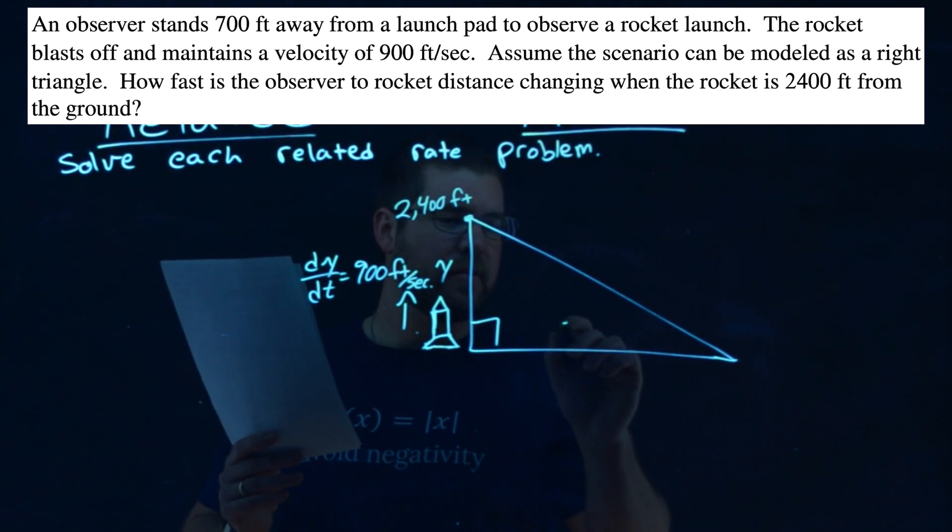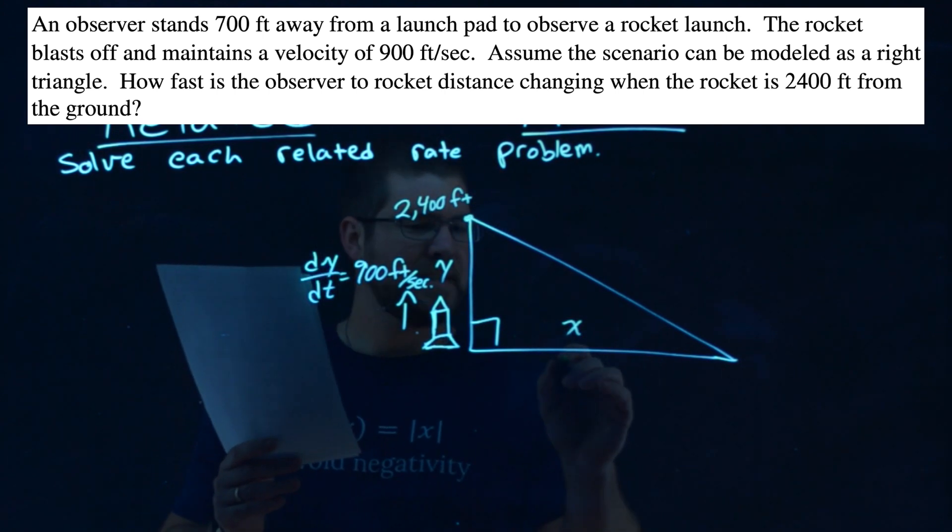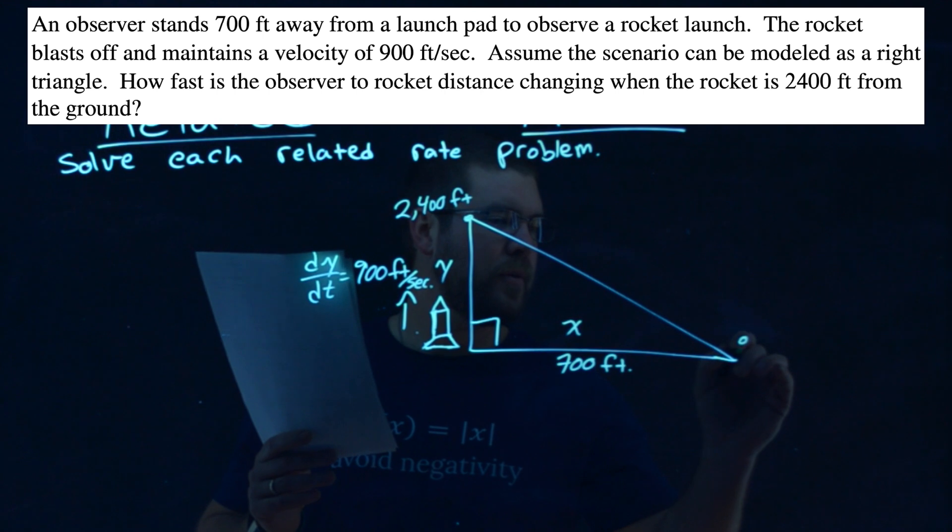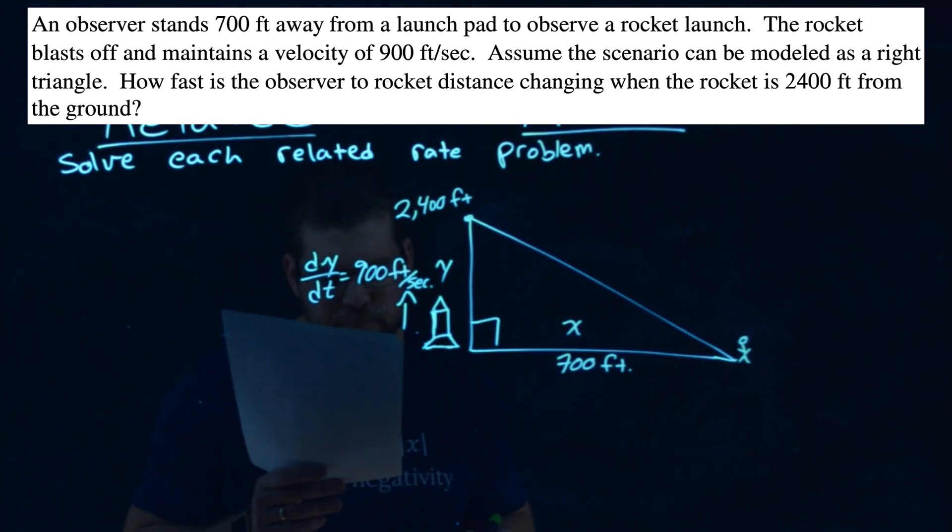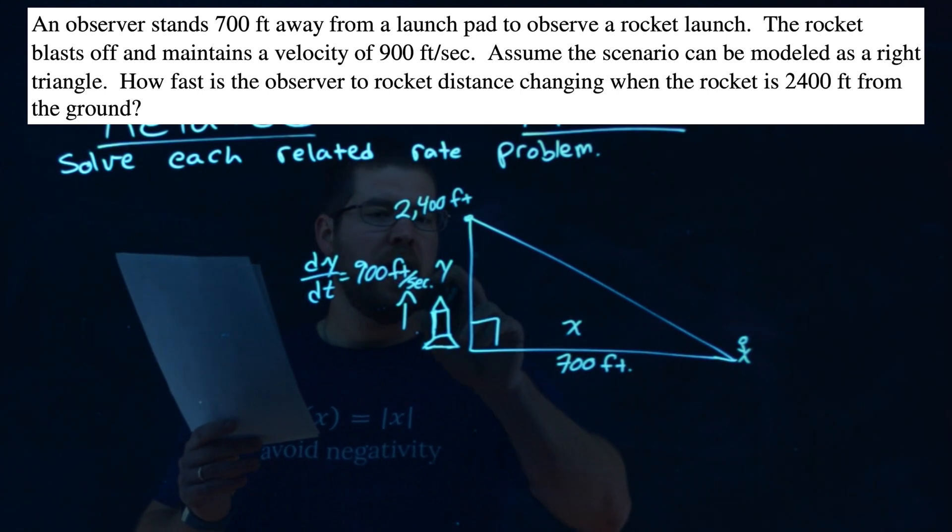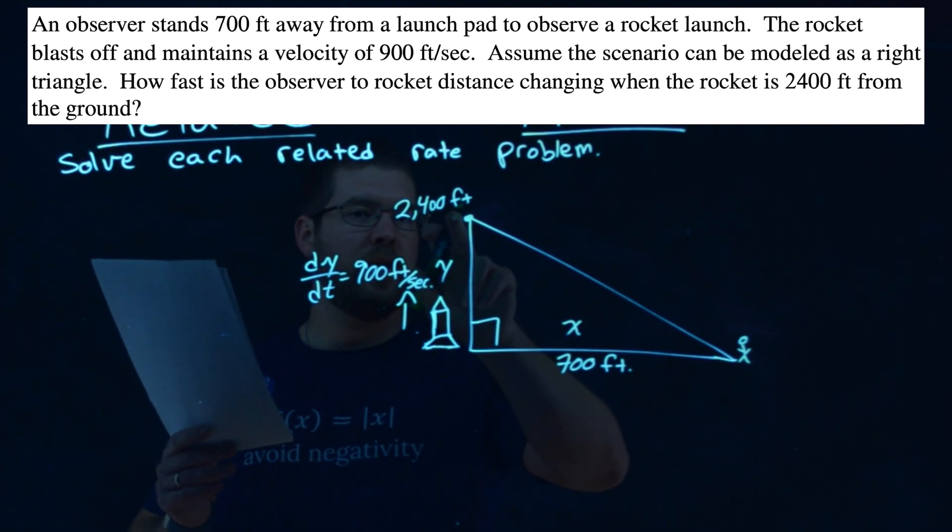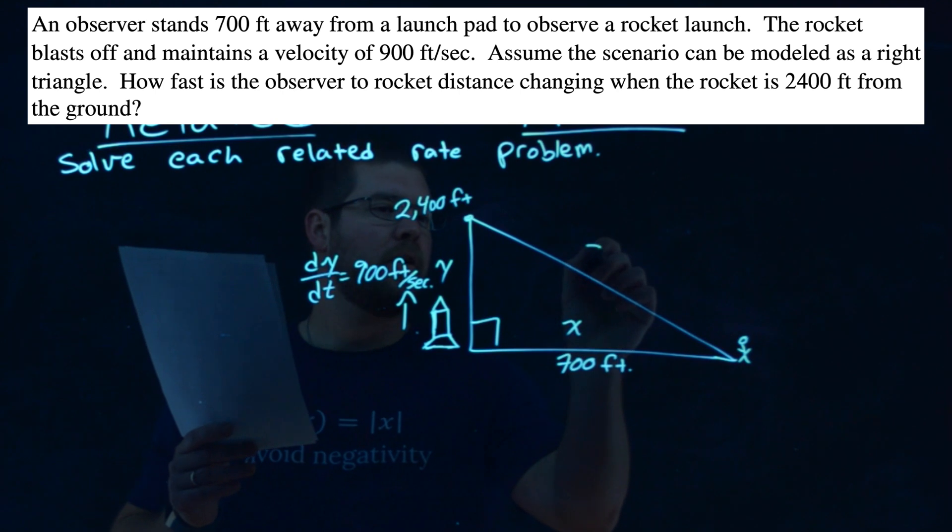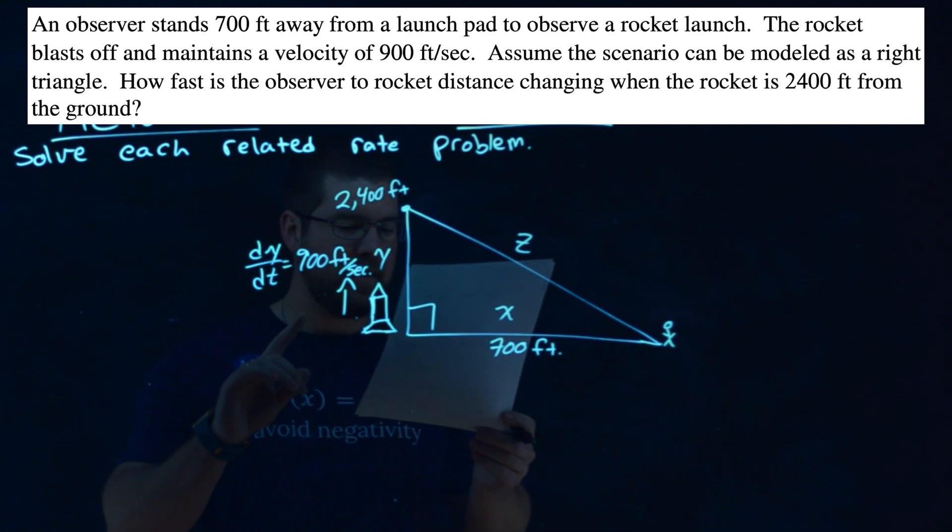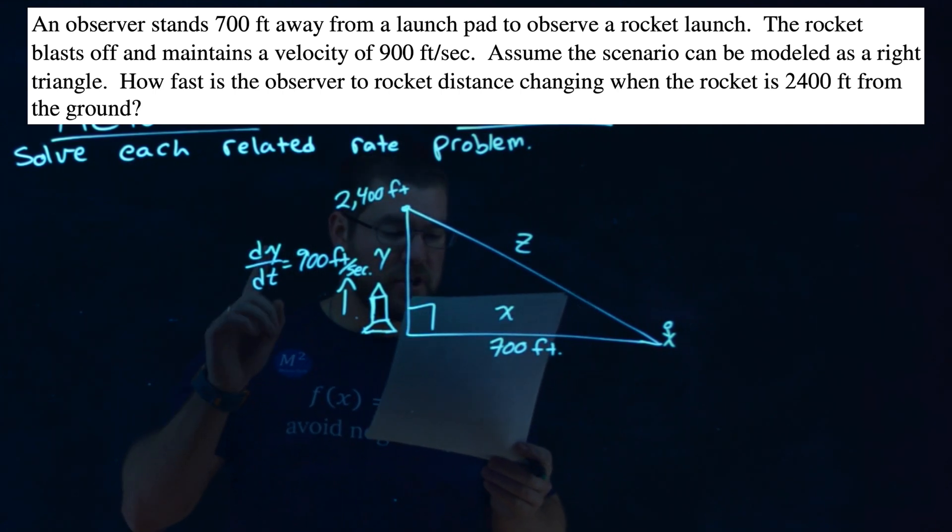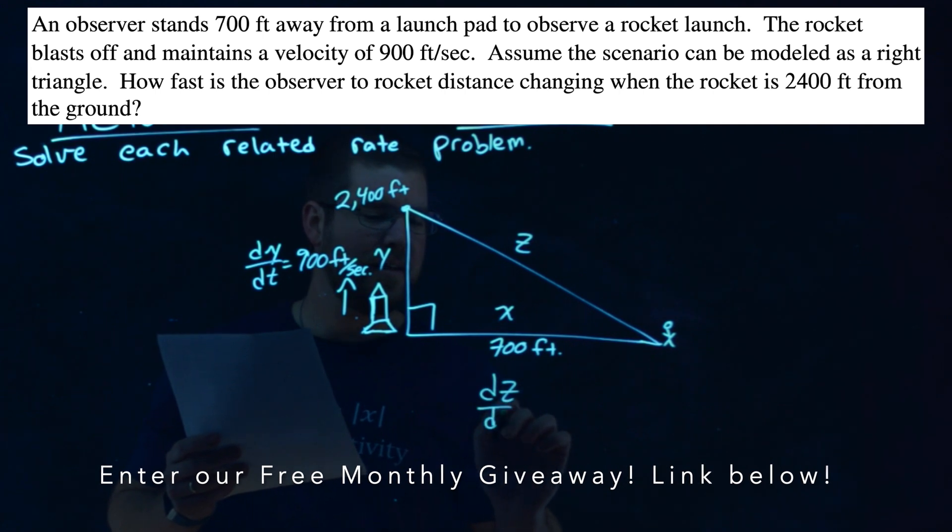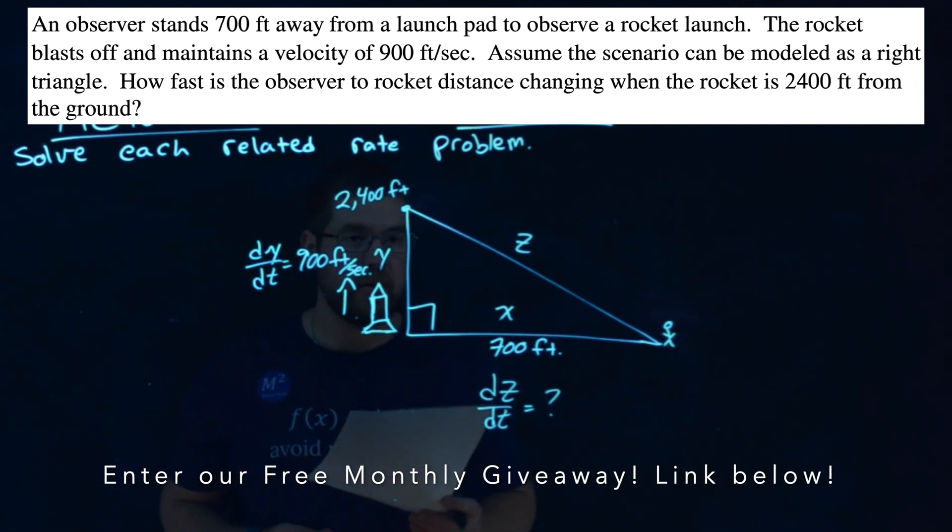Let's call this length X, and the person is 700 feet away, this little person, the observer. So we have 700 feet away, and the height of the rocket at the moment is 2,400 feet, and we'll call this length Z. But they're asking us, how fast is the observer to rocket distance changing? So we want to find dZ/dt here. That's what we're looking to find.